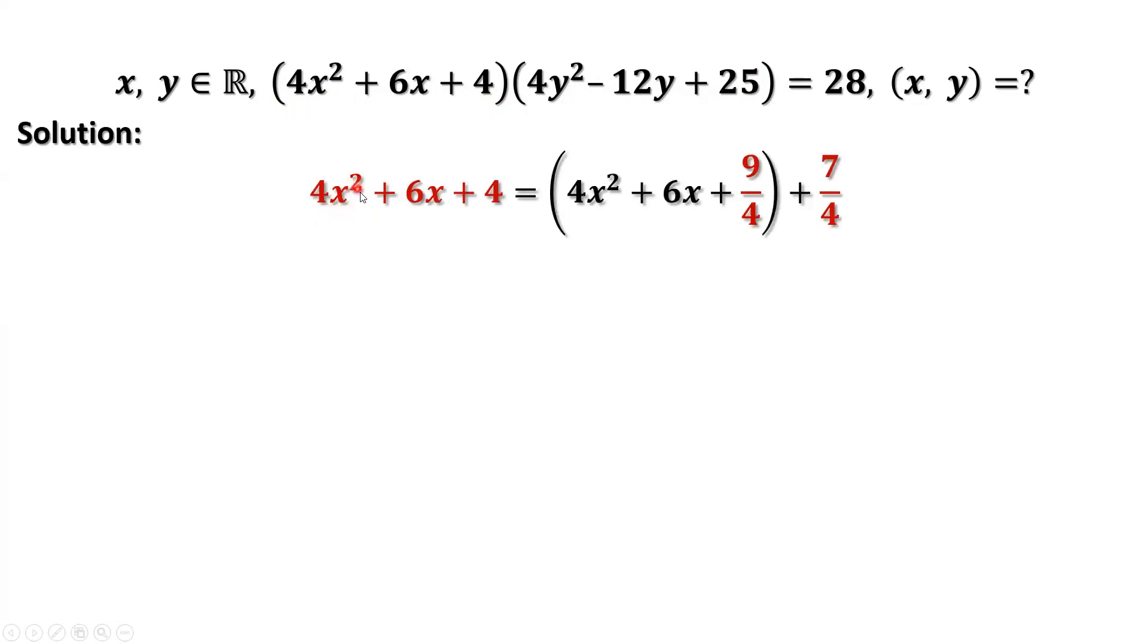4x squared plus 6x plus 4 equals 4x squared plus 6x plus 9 over 4 plus 7 over 4. What are we doing here? We are trying to use the complete square method. 4 equals 9 over 4 plus 7 over 4. This is a complete square, which is 2x plus 3 over 2 then squared plus 7 over 4.